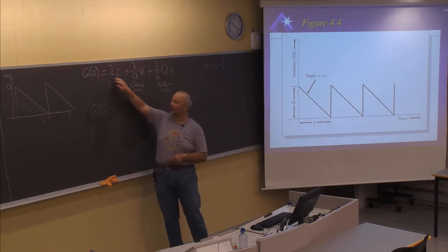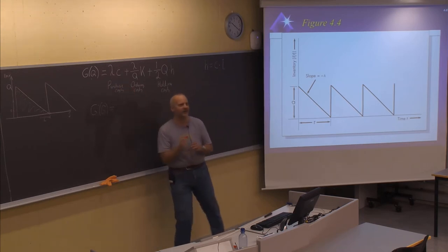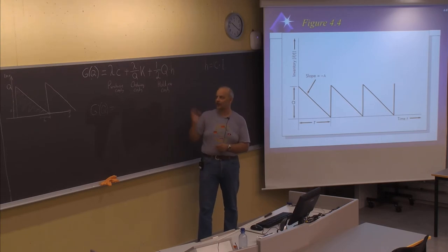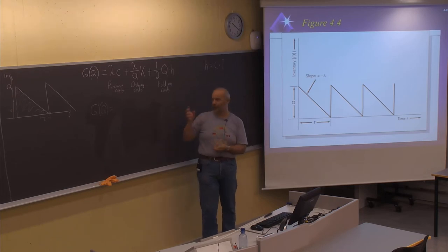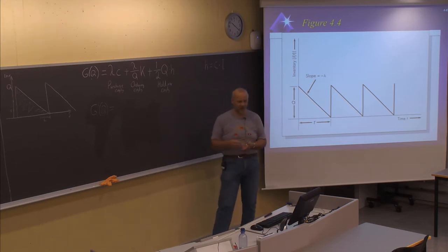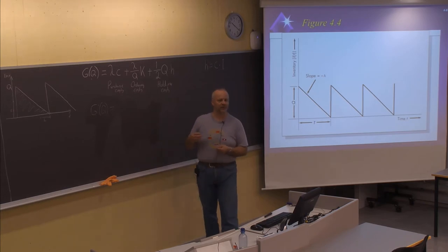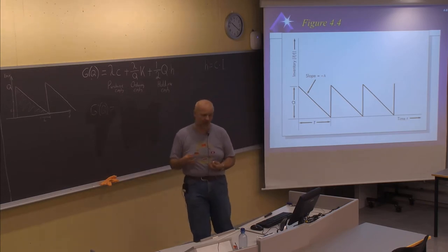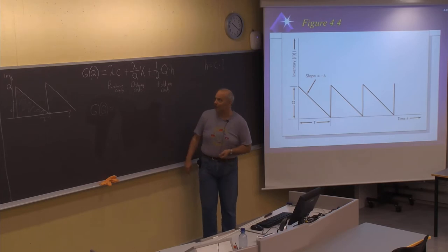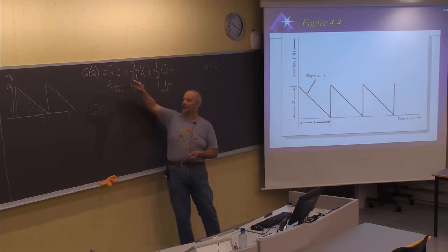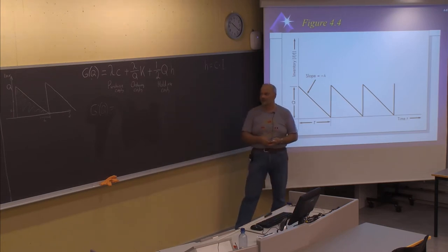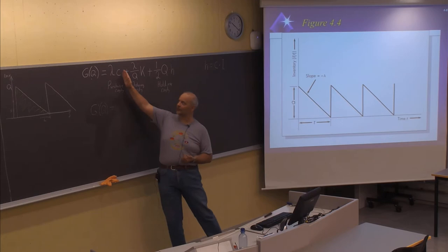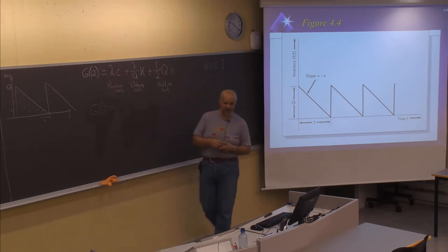This part will not depend on the order size unless you have a situation with discounts where the price will be lower when you are ordering more than a certain break point. We will come back to discount models later. But so far, the purchase cost is considered as a constant, and deriving a constant gives zero — so it is not relevant when determining the optimal order size in this simple example.